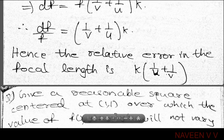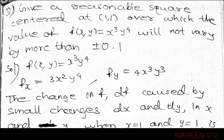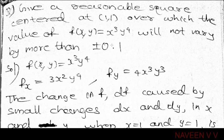Next problem: Find a reasonable square centered at (1,1) over which the value of f(x,y) = x³y⁴ will not vary by more than plus or minus 0.1. The conditions are |x minus x₀| ≤ a and |y minus y₀| ≤ b for the rectangle centered at (x₀, y₀).